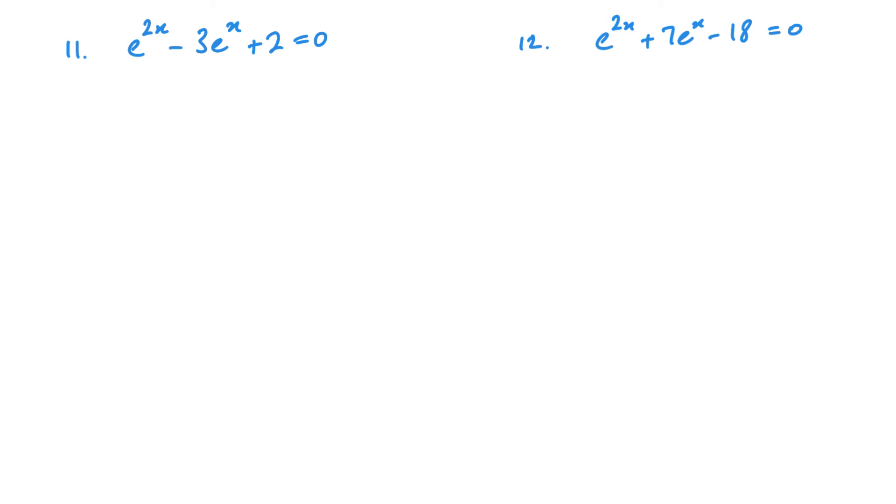For this question, you've got to recognise that it's a quadratic. e to the 2x is the same as e to the x squared, minus 3e to the x plus 2 equals 0. That's what we're dealing with. So it's a quadratic to solve.